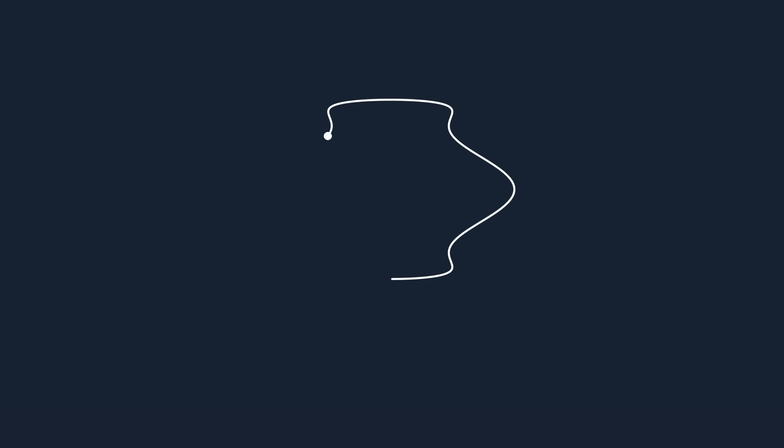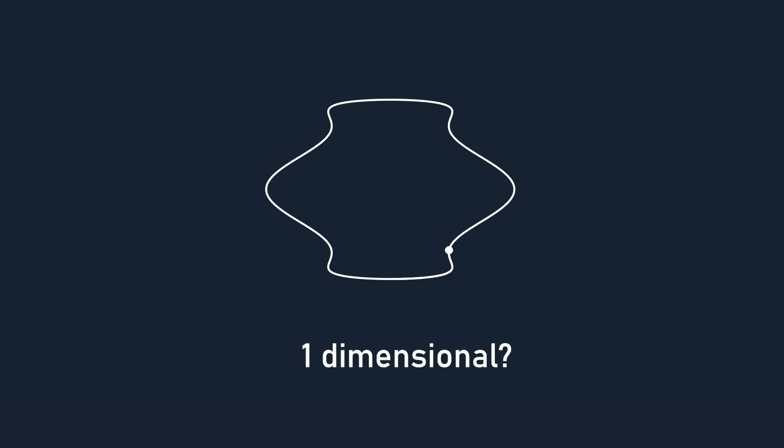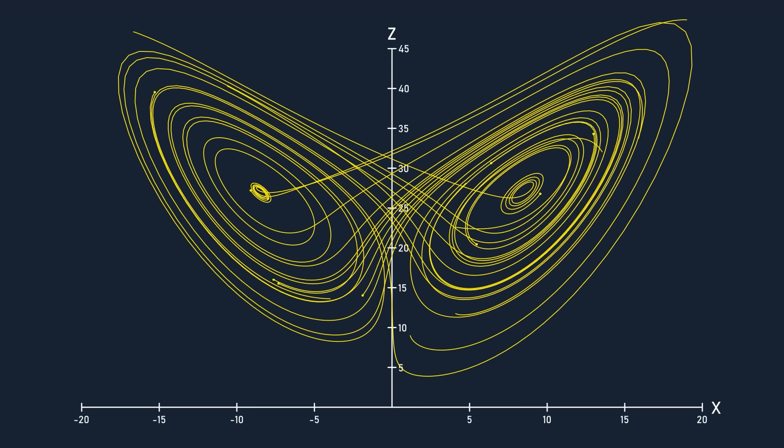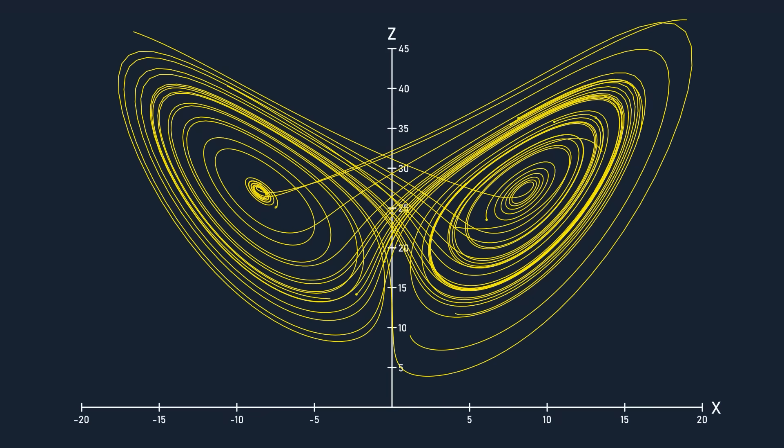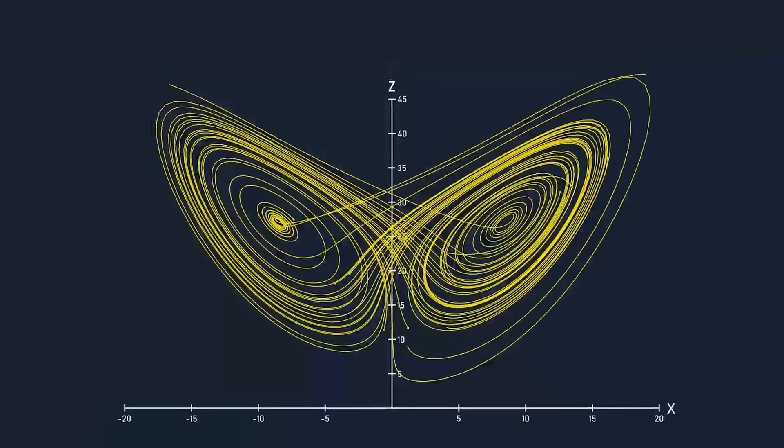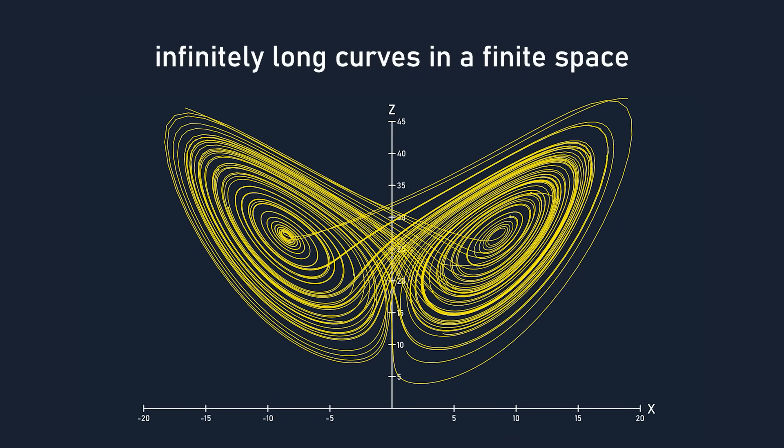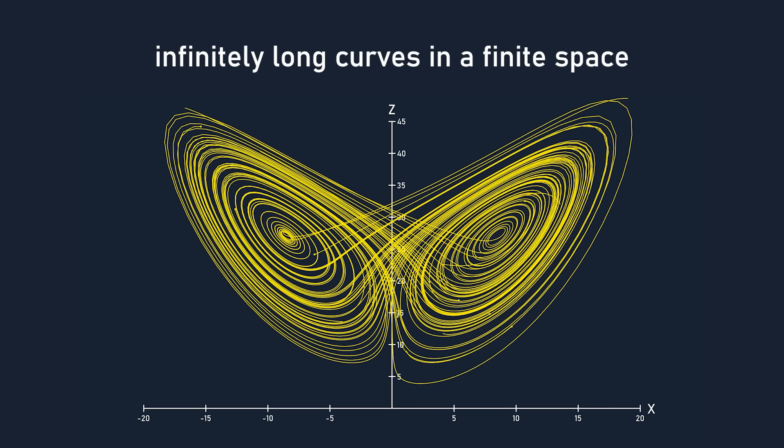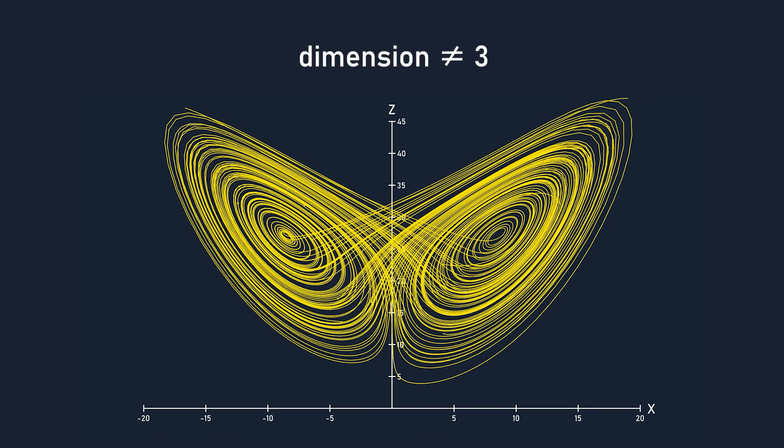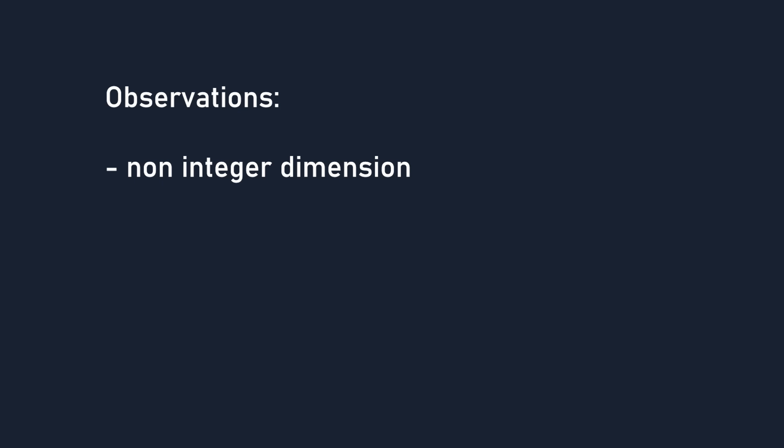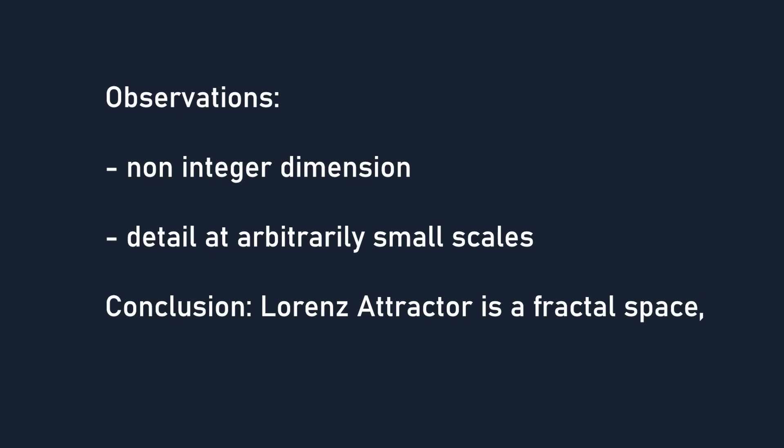Now, trajectories are just curves, so they should be one-dimensional, right? But how come no matter how much you zoom in on this attractor, you can always find more and more trajectories everywhere? That's why this attractor is said to have a non-integer dimension. It's made up of infinitely long curves in a finite space, which are so detailed that they start to partially fill up higher dimensions. It's not one-dimensional, two-dimensional, or three-dimensional. Its dimension is somewhere in between. As a result of this non-integer dimension, and detail at arbitrarily small scales, the set of points in the Lorenz attractor is a fractal space. And that's why it's a strange attractor.